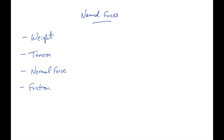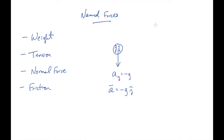Suppose we have an object in free fall — it could be a box, a ball, or whatever. The important thing is that there's only one force acting on it: the force due to gravity pulling the object straight down. I'll draw it as a baseball. We know that if gravity is the only thing acting on this object, its acceleration is going to be straight down.